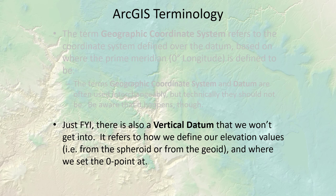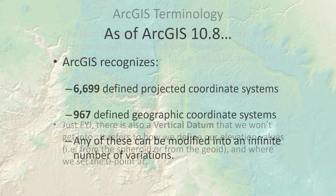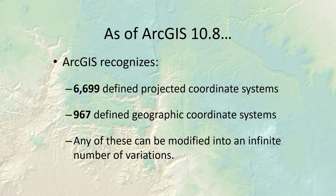There's also a vertical datum, which we won't get into, referring to how we define elevation values — whether from the spheroid or the geoid and where we set the zero elevation point. As of ArcGIS 10.8, ArcGIS recognizes 6,699 projected coordinate systems, almost a thousand geographic coordinate systems, and any of these can be modified into an infinite number of variations. In the next video we'll go over how you actually use these in ArcGIS.